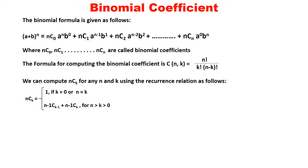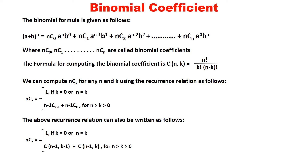You can compute C(n, k) for any n and k using the recurrence relation as follows. C(n, k) is equal to 1 if k equals 0 or n equals k. Otherwise it is C(n−1, k−1) plus C(n−1, k), when k is greater than 0 and n is greater than k. For convenience we also write the recurrence relation as: C(n−1, k−1) plus C(n−1, k), so that it will be easy to write the algorithm.